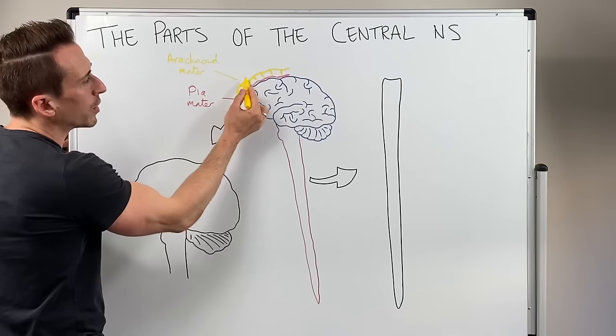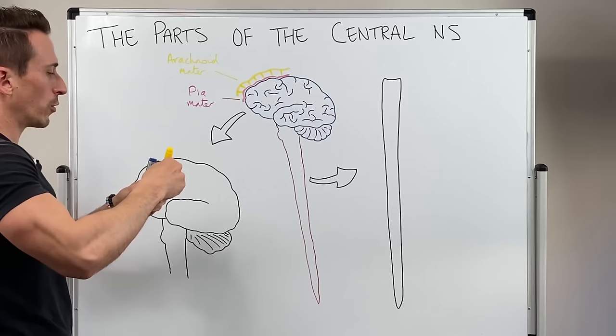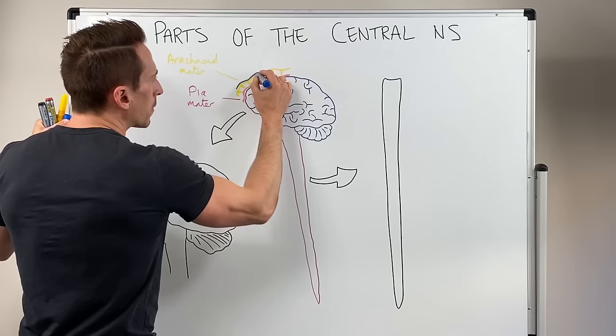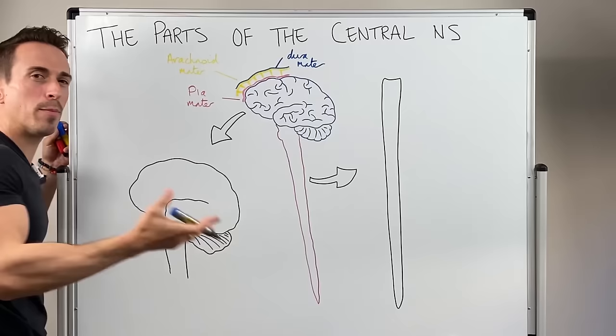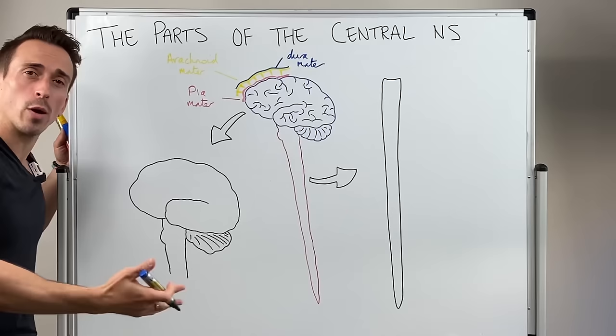Interestingly, below the arachnoid layer but above the pia mater is where the cerebral spinal fluid floats through. Now on top of the arachnoid mater we've got a very tough layer called the dura mater, which means tough mother. And it's like a paper bag consistency, very tough.